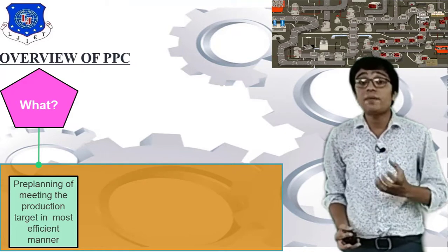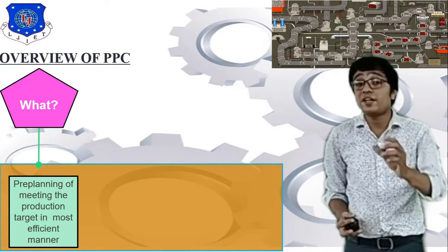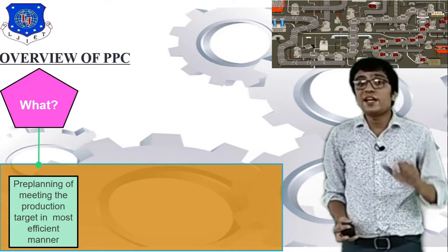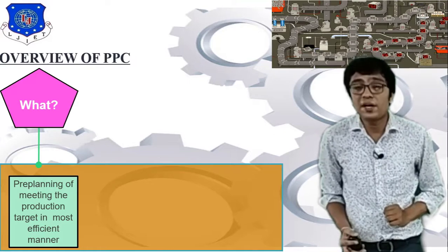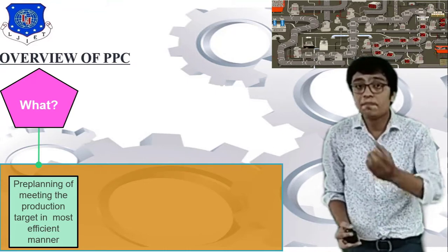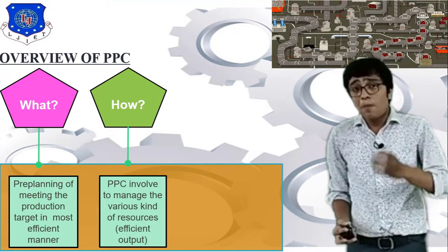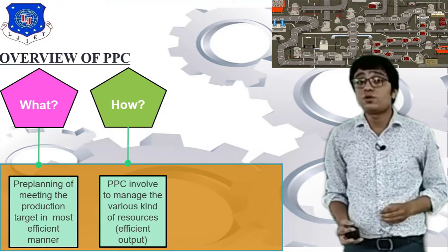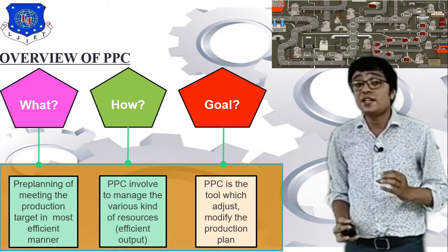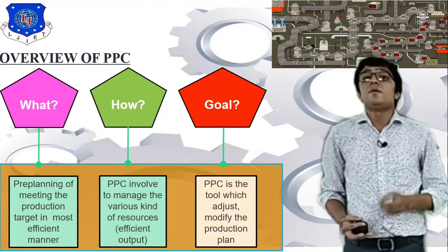The third word is controlling. After completion of your product, you must check and inspect your product — or during the process, you must check your product. This is called controlling. So Production Planning and Control depends on pre-planning to meet production targets by the most economical and efficient method, and it involves managing various kinds of resources and machining tools.